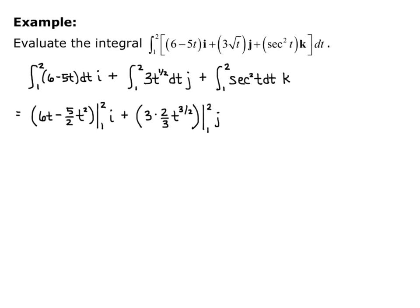The j component is 3 times 2/3 t to the 3/2, evaluated from 1 to 2. And the k component is tangent of t evaluated from 1 to 2.